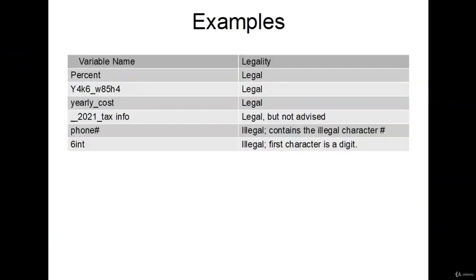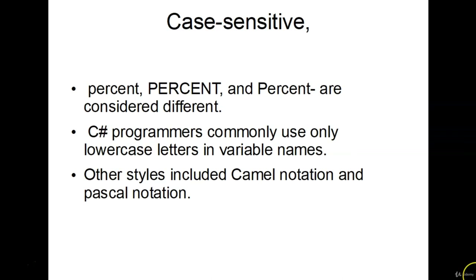Let's look at some examples. Percent with a capital P and the rest lowercase — perfectly legal. Capital Y with an underscore, some numbers, all lowercase letters — perfectly legal. Same with yearly_cost. The next two are illegal: one containing an illegal character and the other starting with a digit. C# is a case-sensitive language, so percent all lowercase, all uppercase, and with a capital P are all considered different variables. It's common for C# programmers to only use lowercase, but there are different styles including camel notation and Pascal notation.